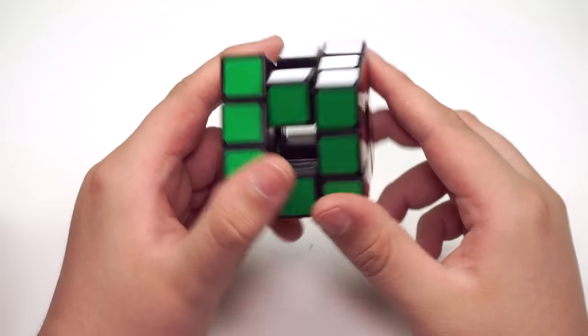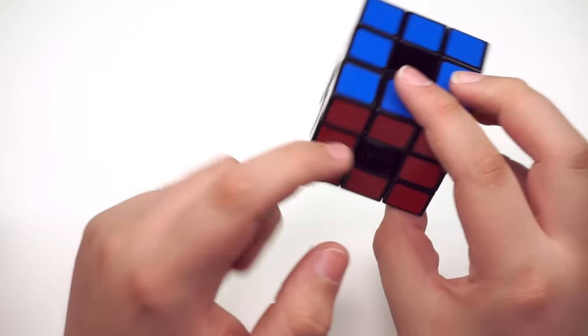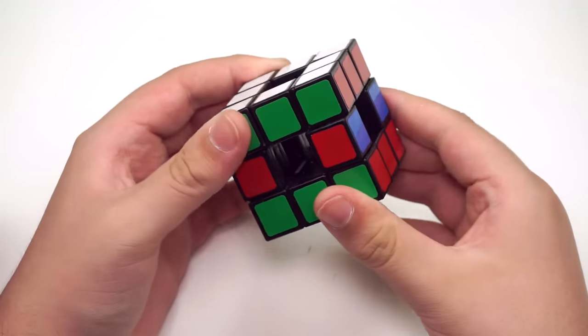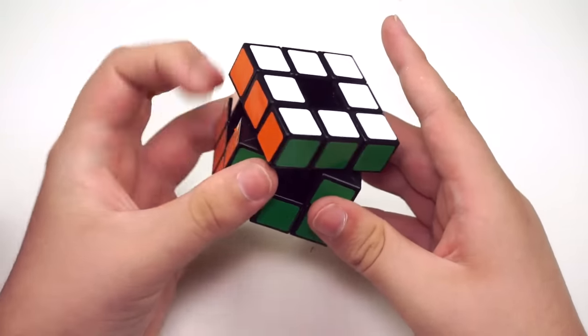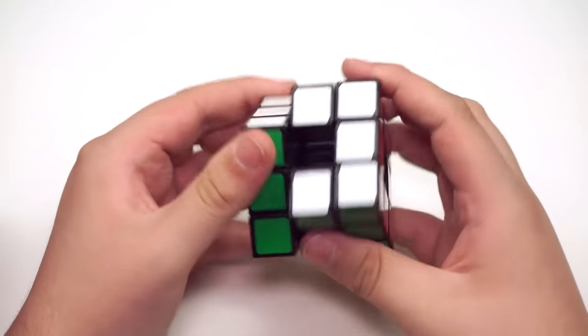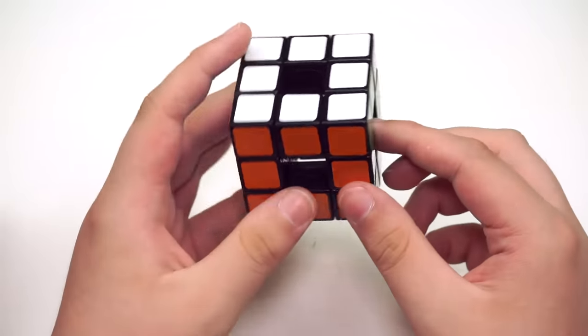This one also solves just like a 3x3, except there's a parity at the end where you can get a two-edge swap like you would on a 4x4. It may seem impossible, but it's really just because there's no centers. Obviously, this cube has no corner cutting because there's no springs. The mechanism just doesn't allow for it. The Lanlan Void Cube is a very fun puzzle, and I'm excited to solve it.